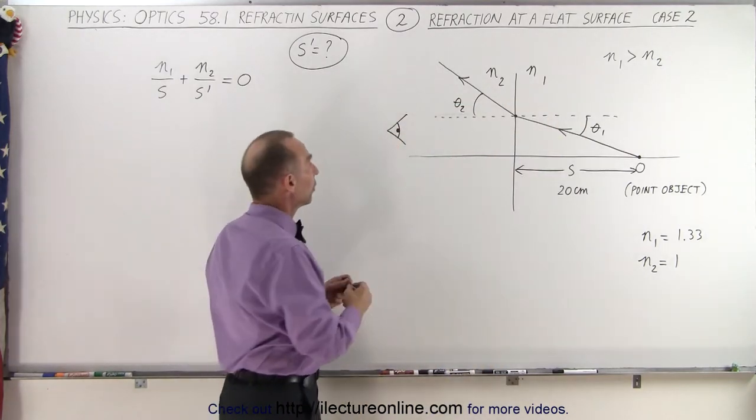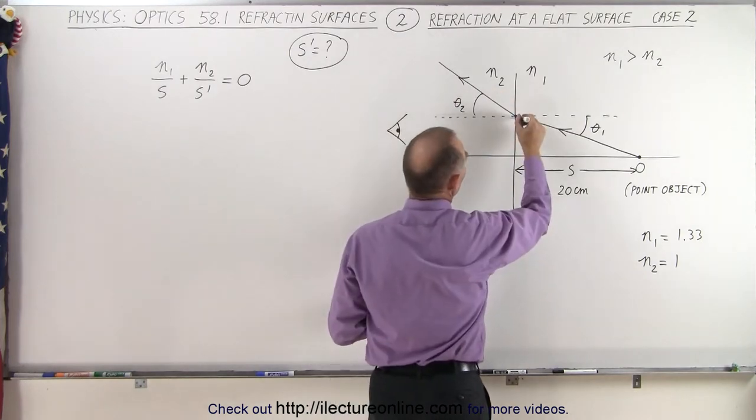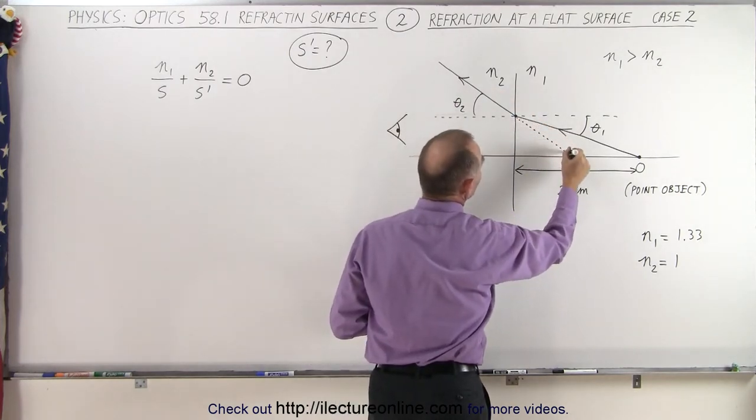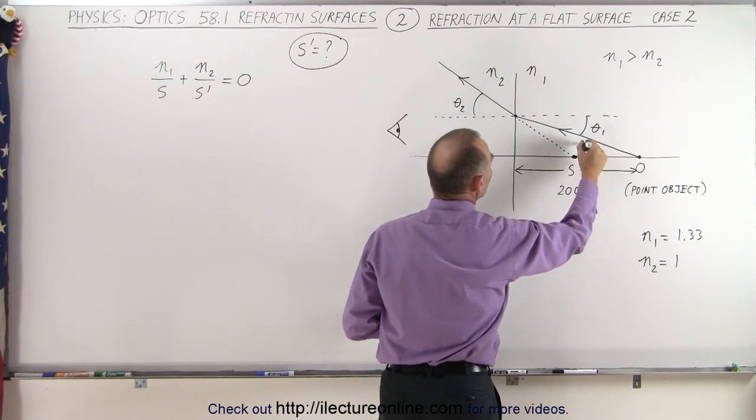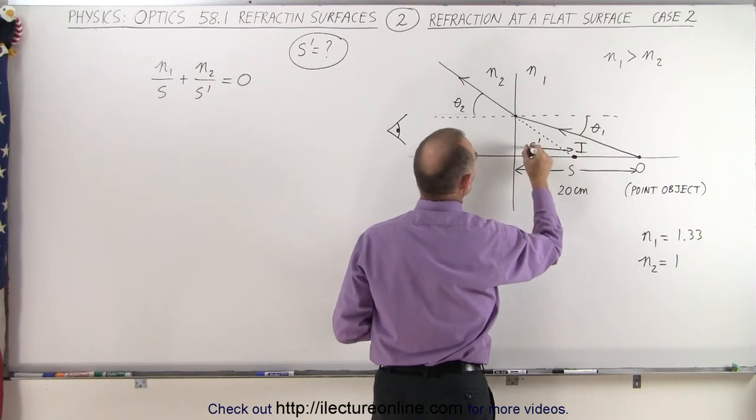Now, for the observer, sees the ray coming from this direction and projects backwards, saying that it appears as if the ray came from this location, and that's where the image is. And then this here, S' will be the image distance.